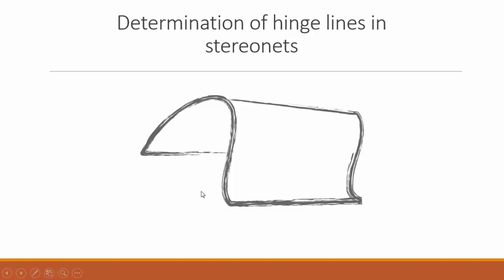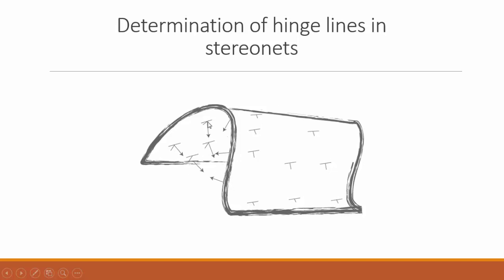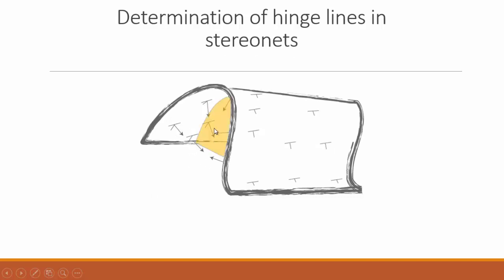Consider a simple folded structure where you have taken compass readings — dip directions and dip angles — in the field. From these data you can plot the poles to the planes. The pole to a plane is the normal direction to each surface. If we are looking at a cylindrical fold — a fold with a straight hinge line and uniformly oriented limbs — then the poles to all these planes will fall onto one surface, shown here in pale yellow or orange.